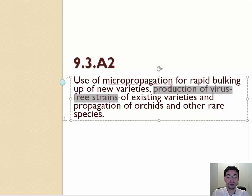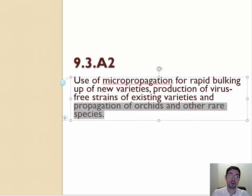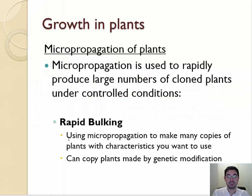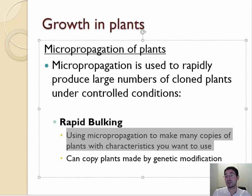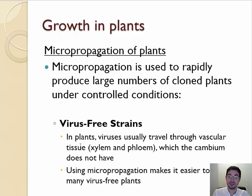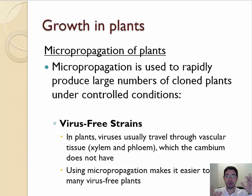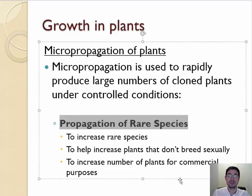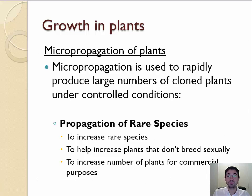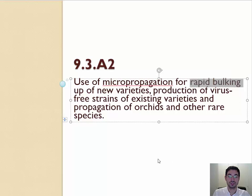Micropropagation can rapidly produce new varieties of plants — if you want to spread a new type of flower, this is an easy way to get many without waiting for seeds. You can also make virus-free strains, since viruses travel through the plant's vascular system — the xylem and phloem — but by using the meristem, which is not the infected part, you can make virus-free plants. You can also get large numbers of rare species like orchids that don't have enough seeds to reproduce normally. So micropropagation is used for rapid bulking of plant numbers, producing virus-free strains, and propagating rare species.